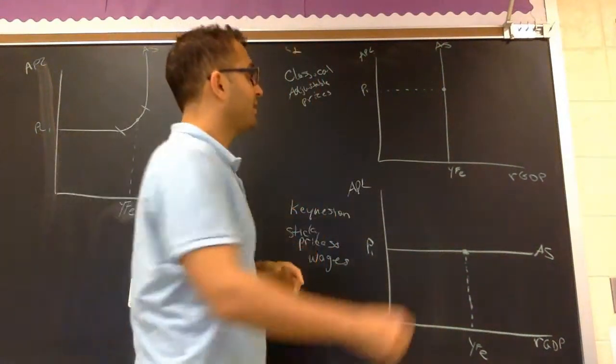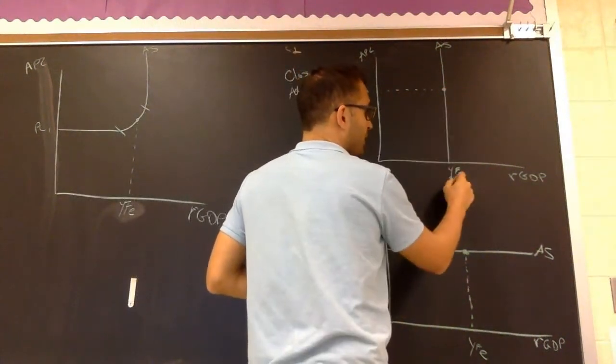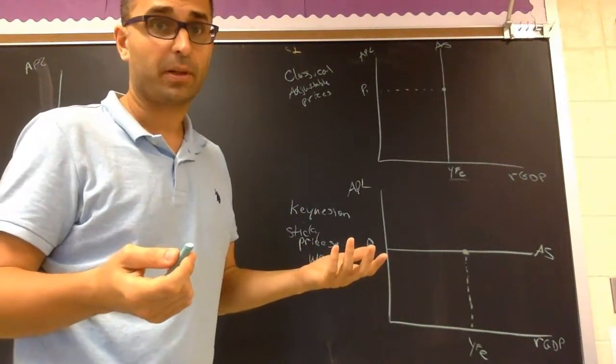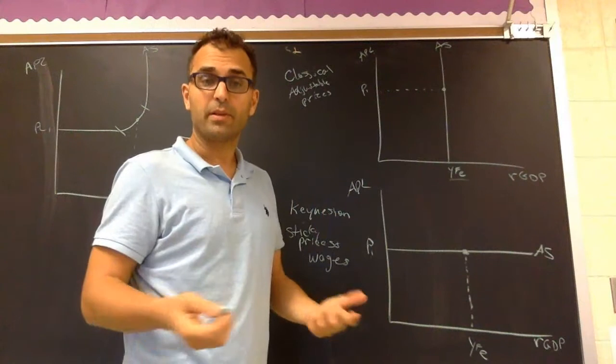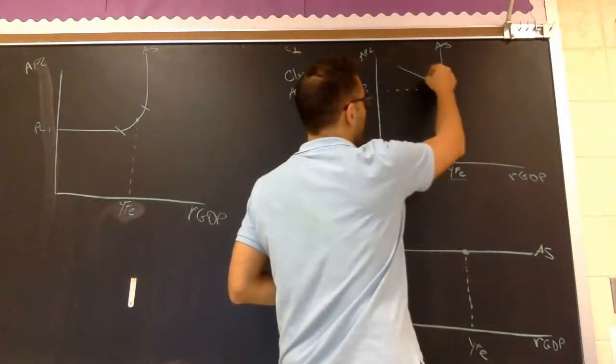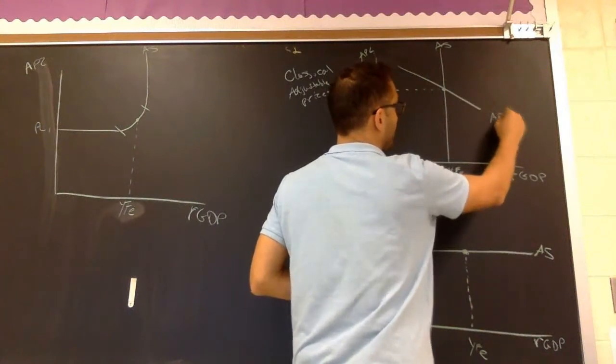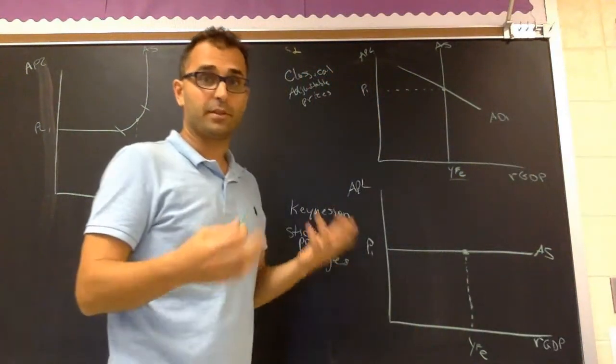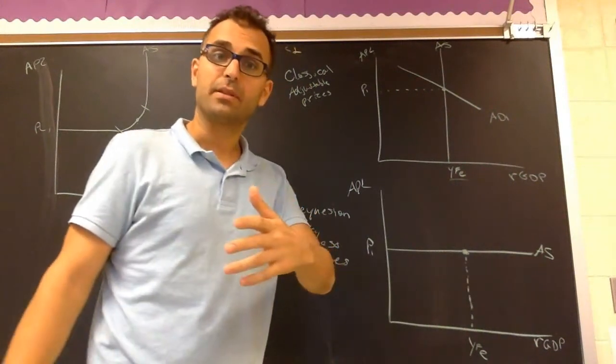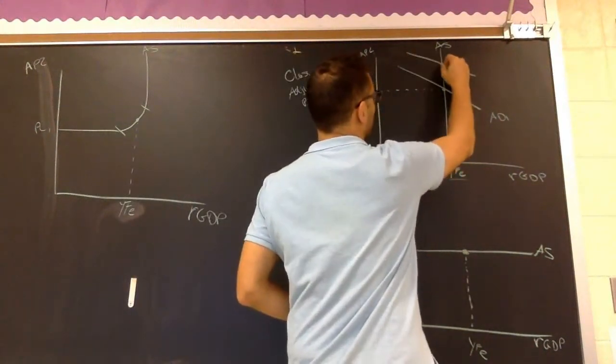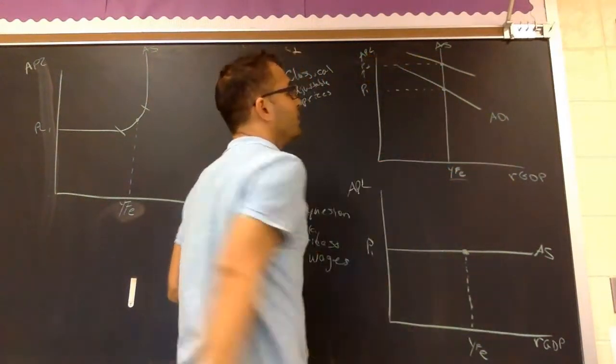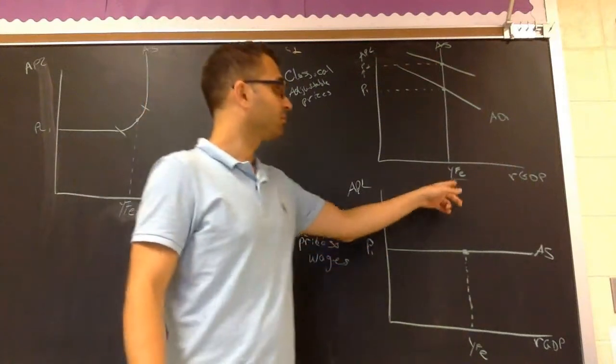Let's say that this particular point is at Y at full employment, so output is at our most efficient point of production, the natural rate of unemployment or full employment of output. And let's say that our demand curve is here, AD1. What happens if demand increases? Well, if demand increases, then price level increases to P2. What happened to output? Nothing. Classical theory.